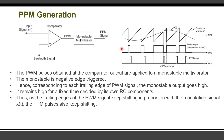In the pulse width modulated signal, the rising edges of each pulse are constant and only the falling edges vary with respect to the message signal. To preserve those falling edges and generate a pulse position modulated signal, we generate a short duration pulse at each falling edge. The PWM signal is applied to a monostable multivibrator, which is triggered on the negative edges of the PWM signal. The monostable multivibrator generates a short duration pulse based on its RC time constant, producing the PPM output.